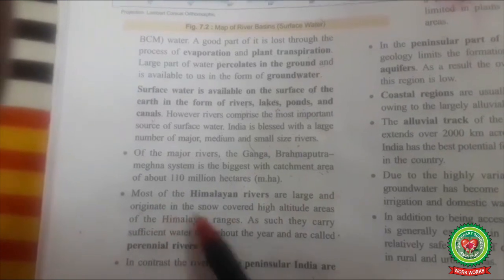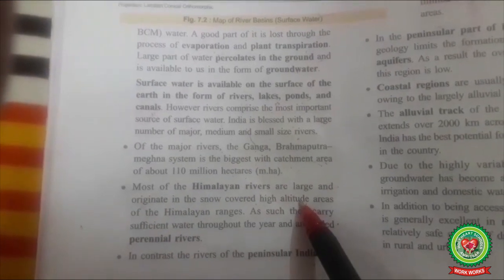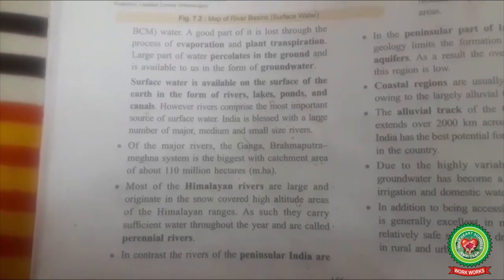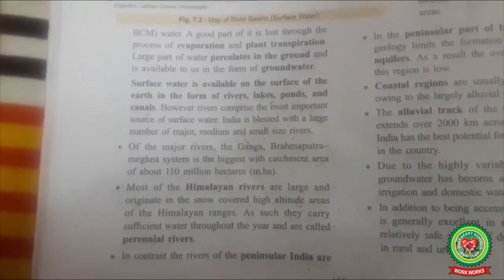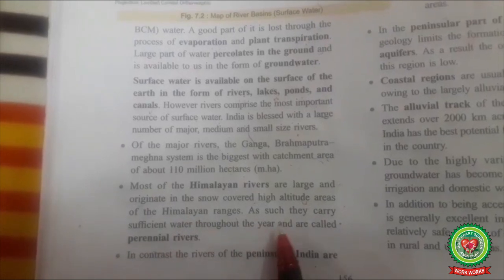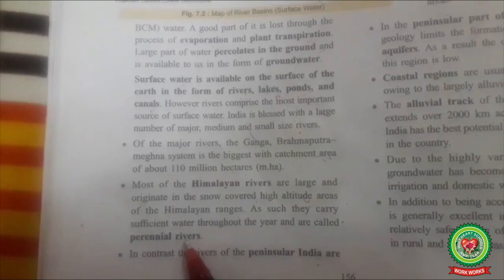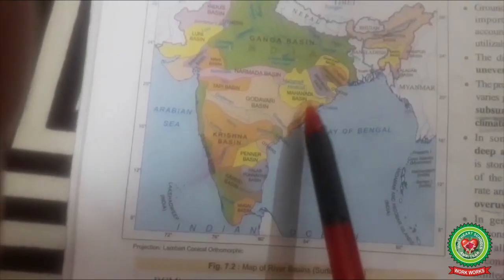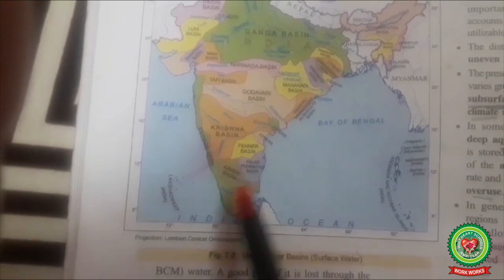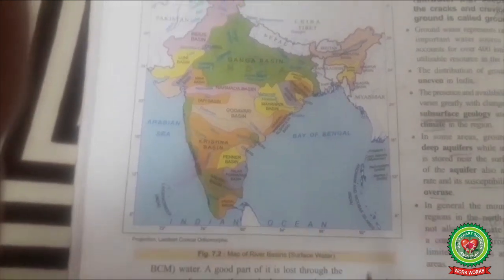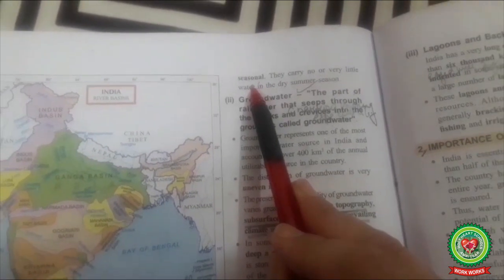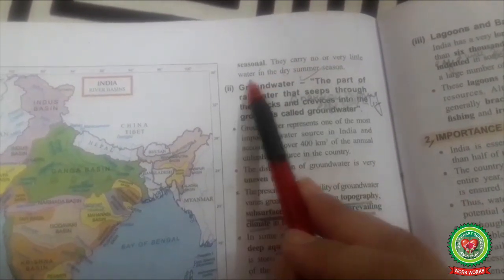Most Himalayan rivers are large and originate in snow-covered high-altitude areas of the Himalayan region. Rivers like Ganga, Yamuna, Indus, Jhelum, Chenab, Sutlej, and Brahmaputra carry sufficient water throughout the year — they are called perennial rivers. In contrast, rivers of Peninsular India such as Mahanadi, Godavari, Krishna, and Kaveri are seasonal, meaning they flow only in a particular season and carry little or no water in the dry summer season.